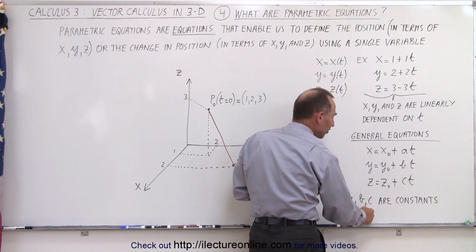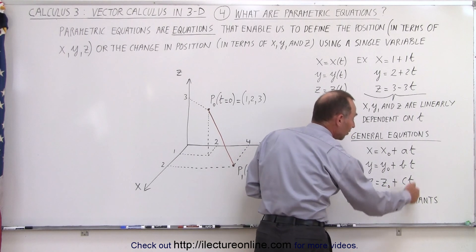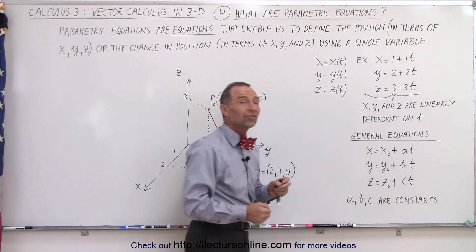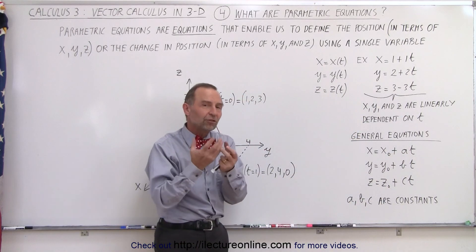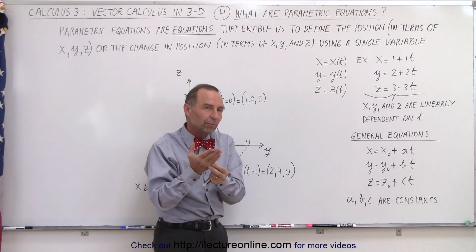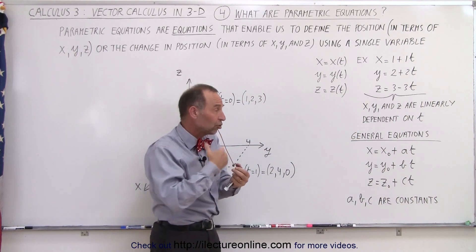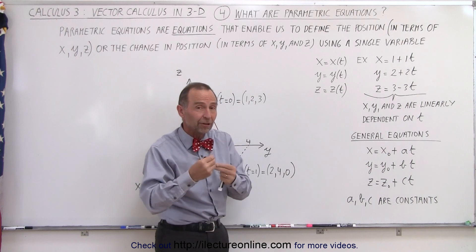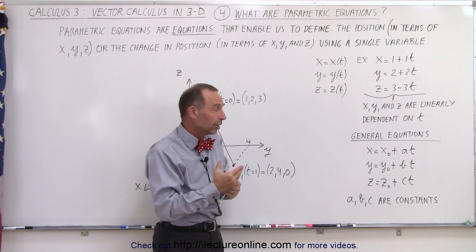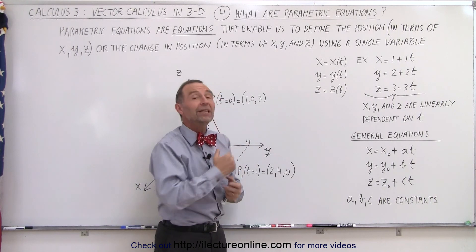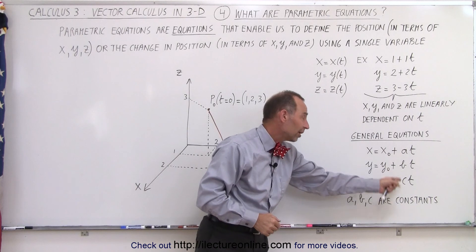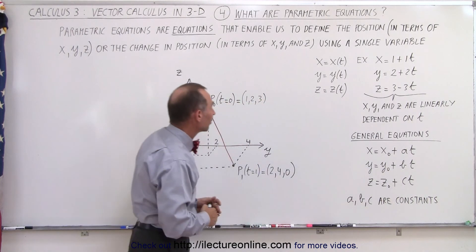Here a, b, and c are constants. If they're different constants, then there's a different relationship between x, y, and z — in other words, the change in x, y, and z will be different compared to one another when t changes, because these constants are different.